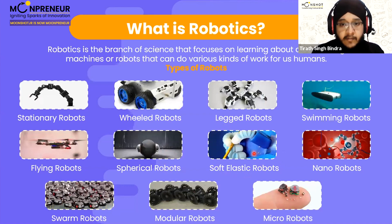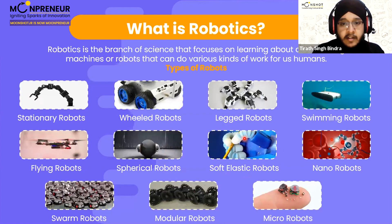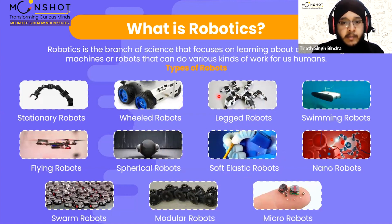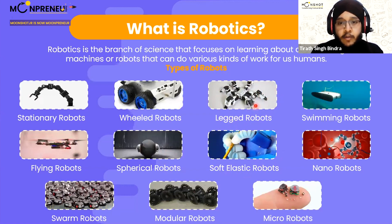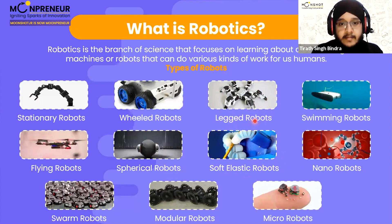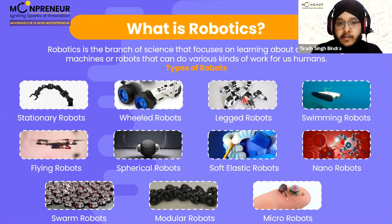Soft elastic robots have very flexible movement, like human fingers. Then there are legged robots — you may have seen a four-legged or six-legged robot in a previous Arduino session.